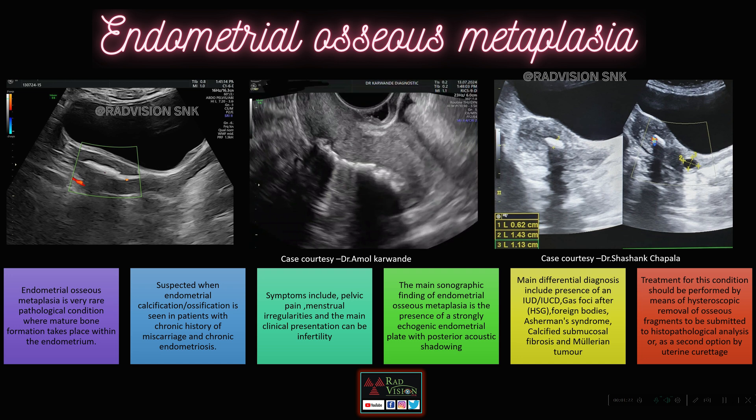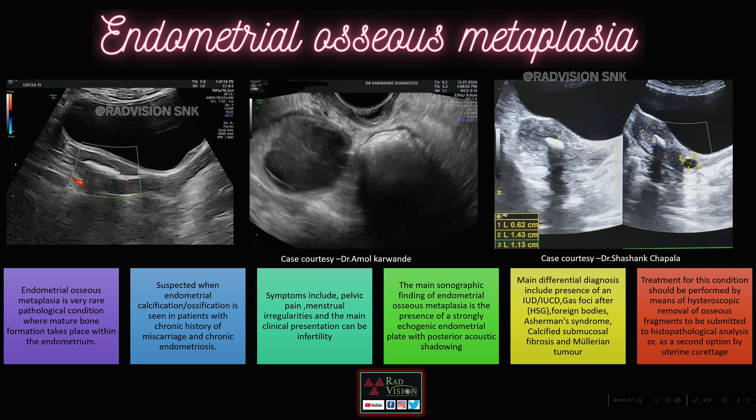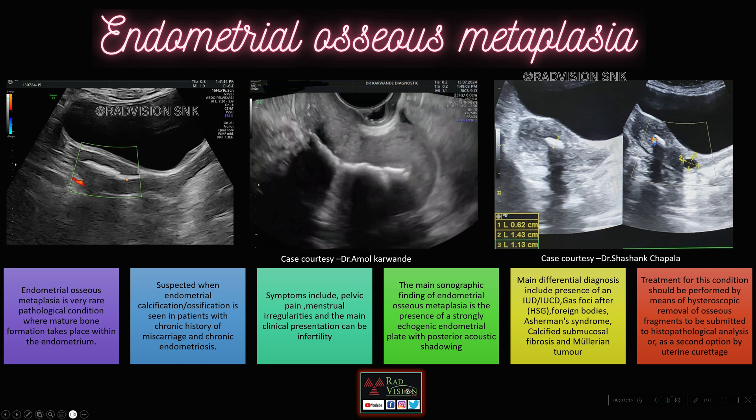Sonographic findings include echogenic endometrial plate with calcifications or ossifications and post-acoustic shadowing. Differentials to consider are intrauterine contraceptive device, gas mimicking this pattern after HSG, foreign bodies, Asherman syndrome, calcific submucosal fibrosis, and Müllerian tumors. Treatment will be hysteroscopic removal of osseous fragments with histopathological correlation, or uterine curettage. This was a classical case of endometrial osseous metaplasia.